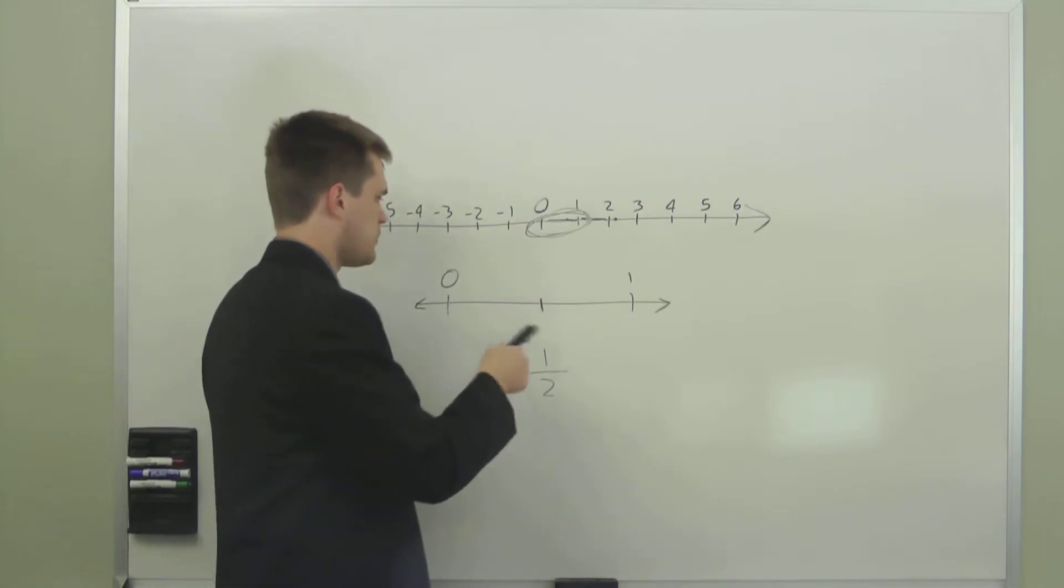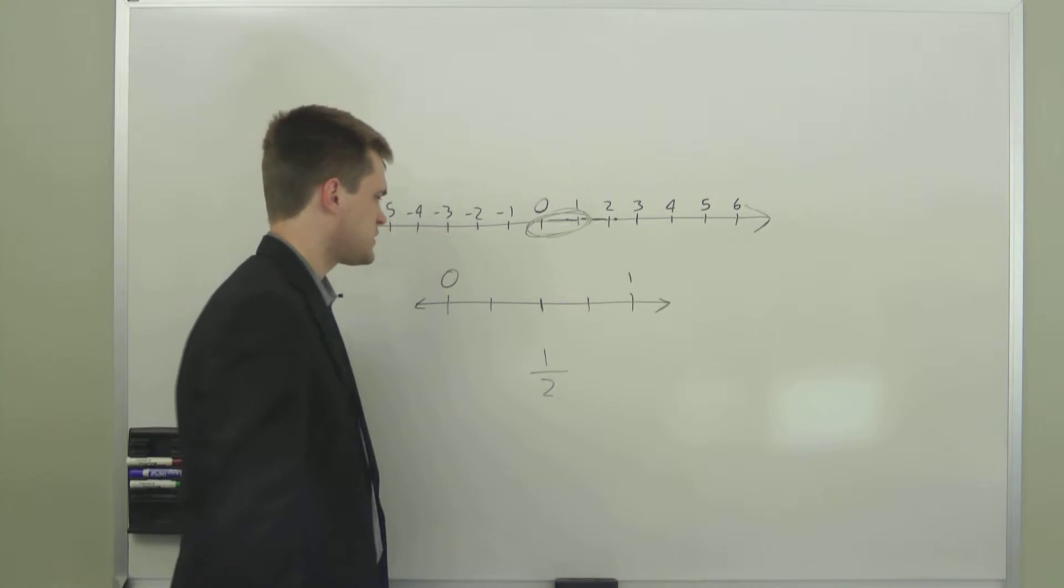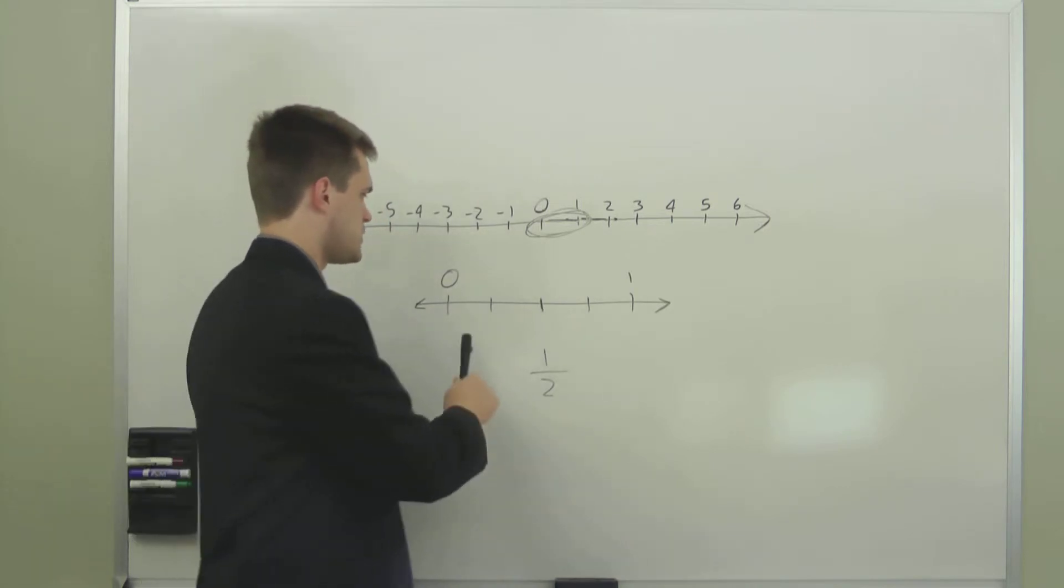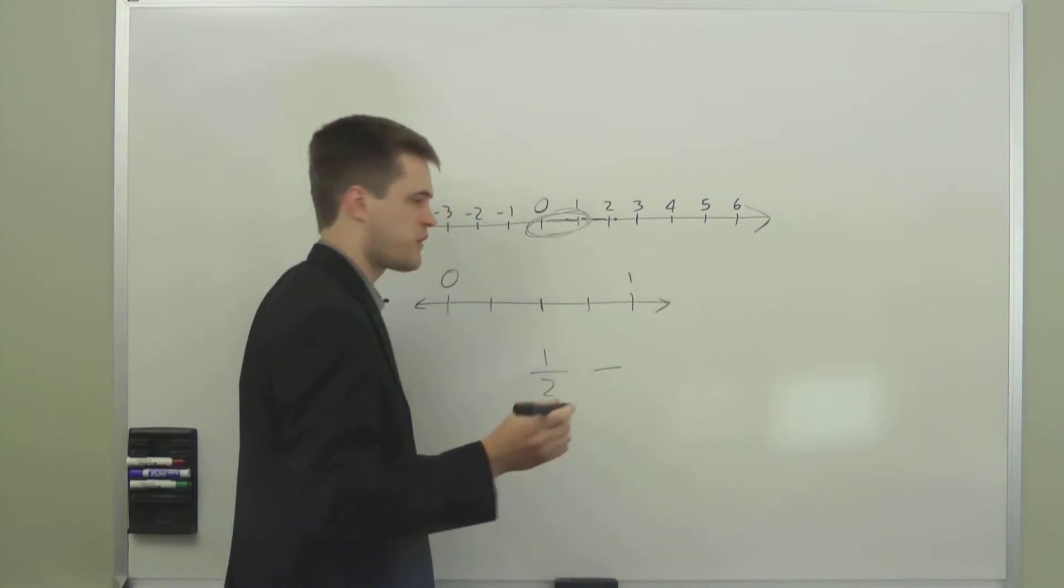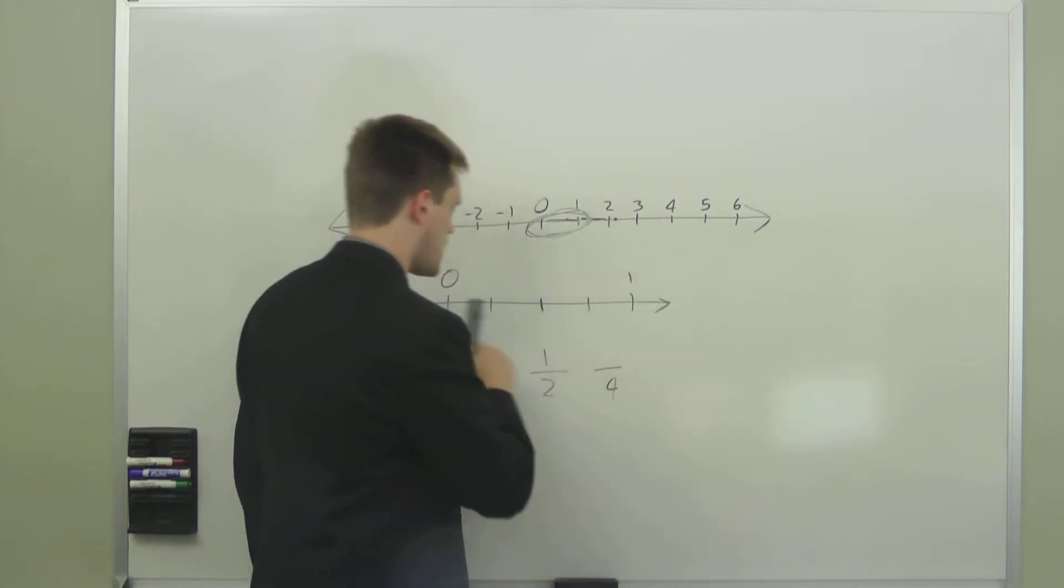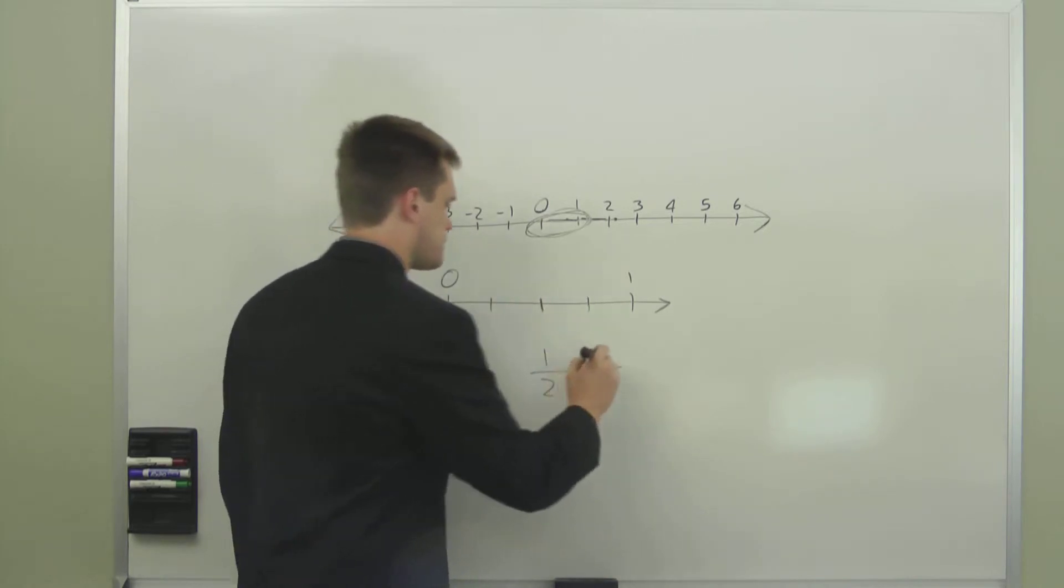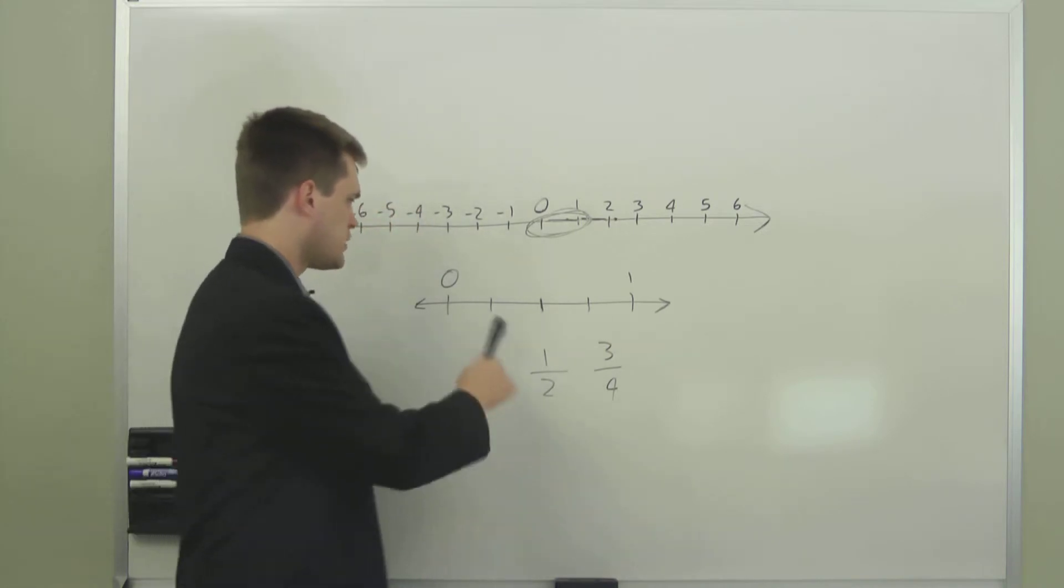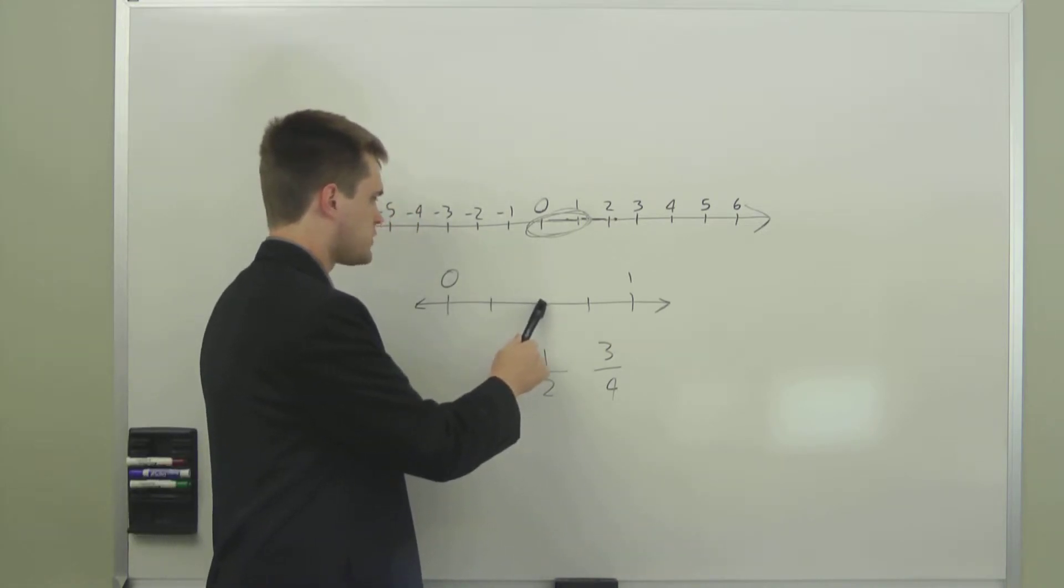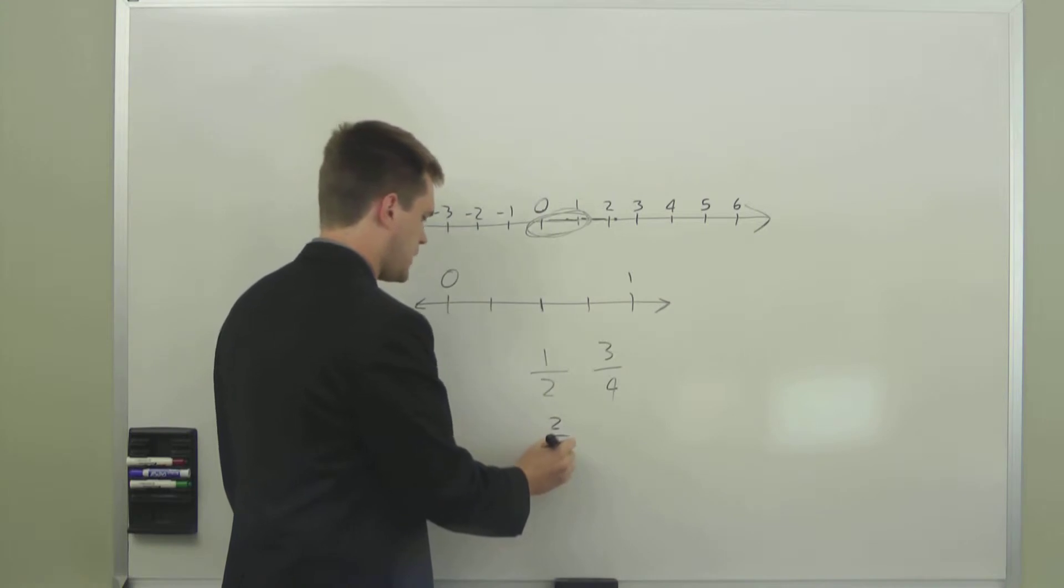If we want to go further, we can divide it up into four segments. Now we have four equal segments. If we decide we want to go one, two, three of those segments, we can write this as a fraction with a four on the bottom because there's four parts and we've gone three of them. We write this as three fourths. And so you may notice that if you go two fourths, that's the same as going one half. So one half and two fourths are the same thing.